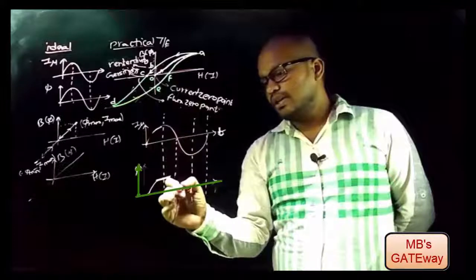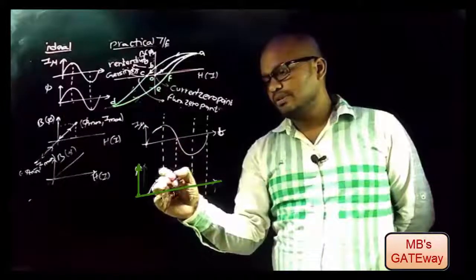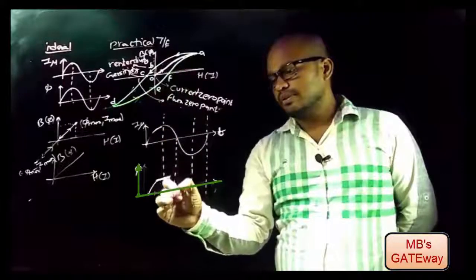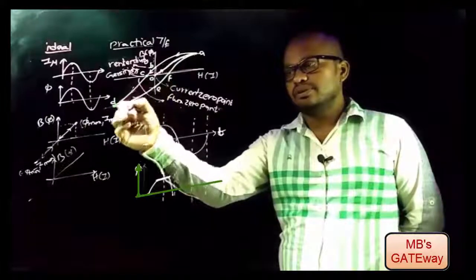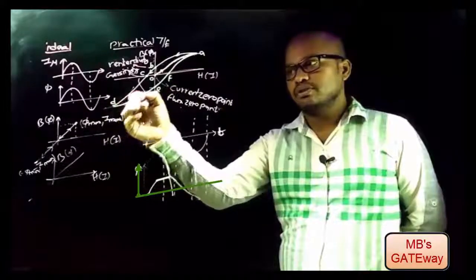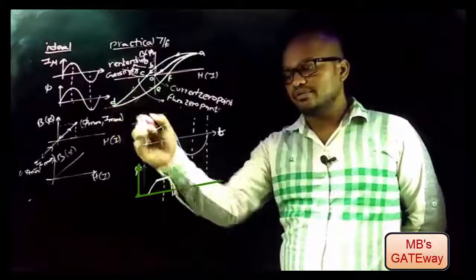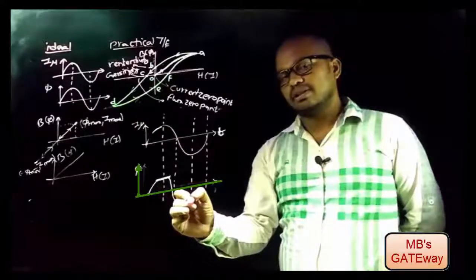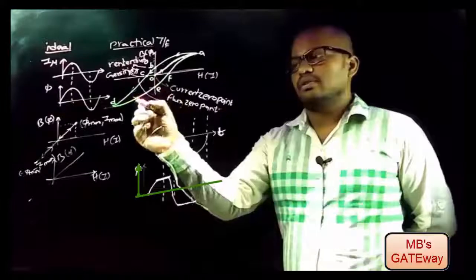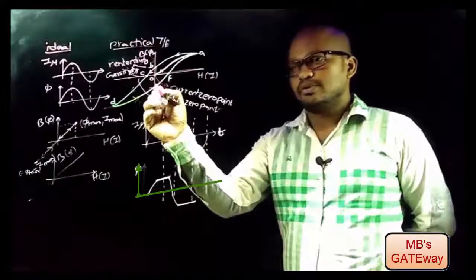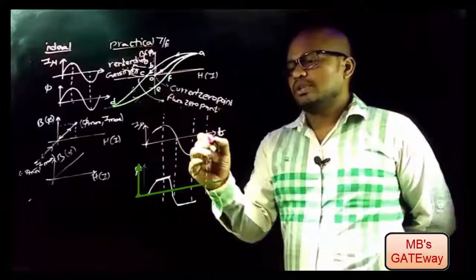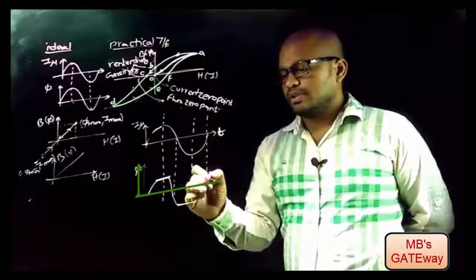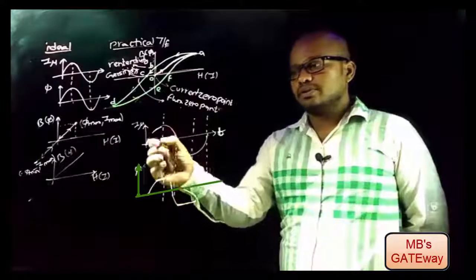For zero current there will be some flux. With decrease in current I, flux φ follows the same path, and in the reverse direction with further decrease in current I the core enters saturation again — so there is no further decrease in flux φ. When current reaches 0 there is again some residual flux, represented as OE. With sinusoidal input current we get this type of flux set up in the core.